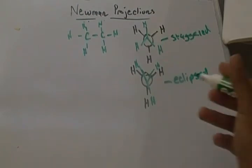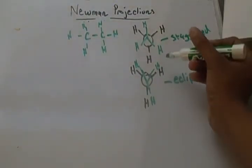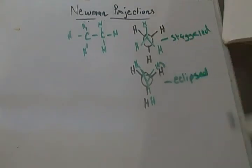And eclipsed states are always going to be higher in energy than staggered states, because this hydrogen-hydrogen interaction is a repulsive force. So it's creating a higher energy state molecule.